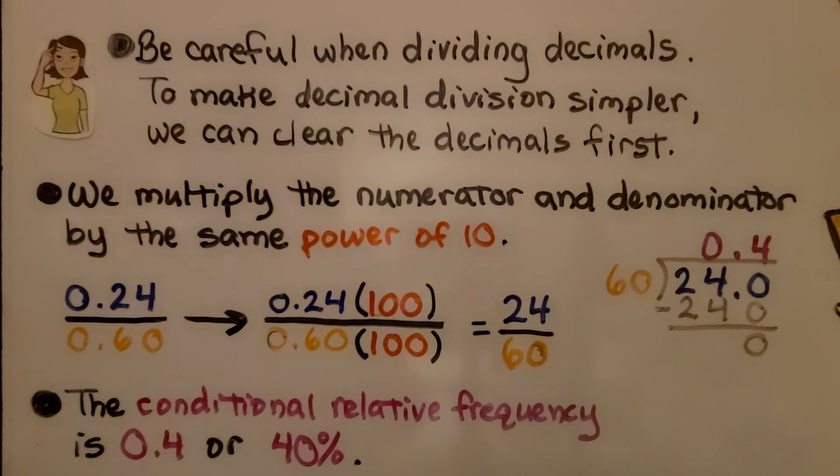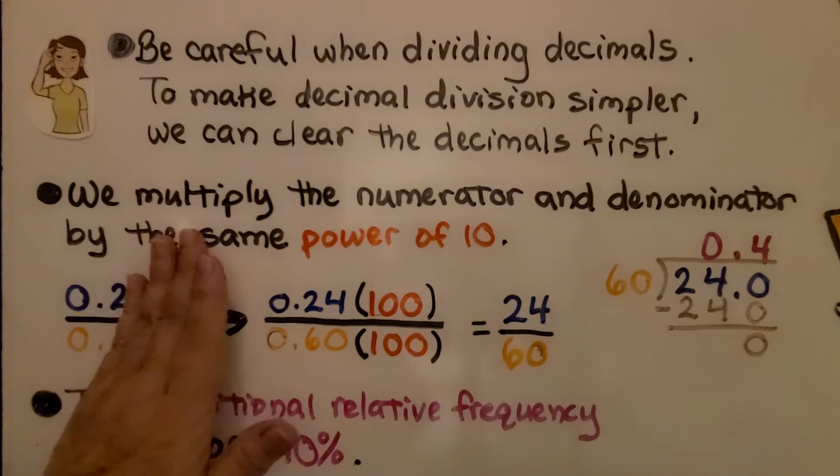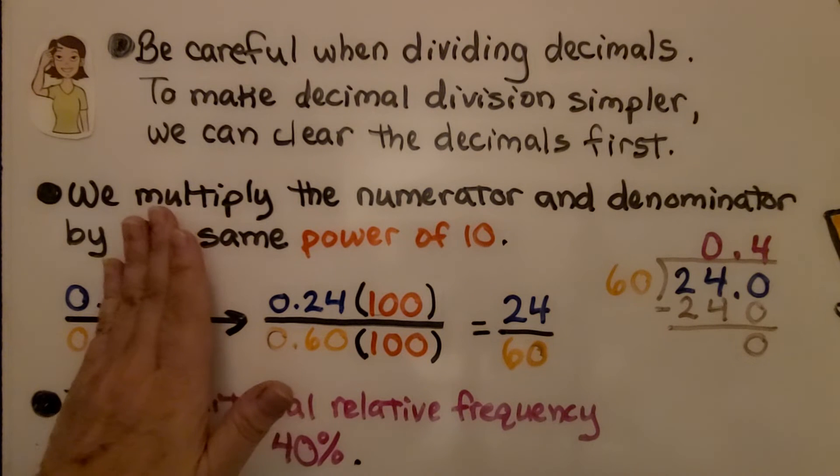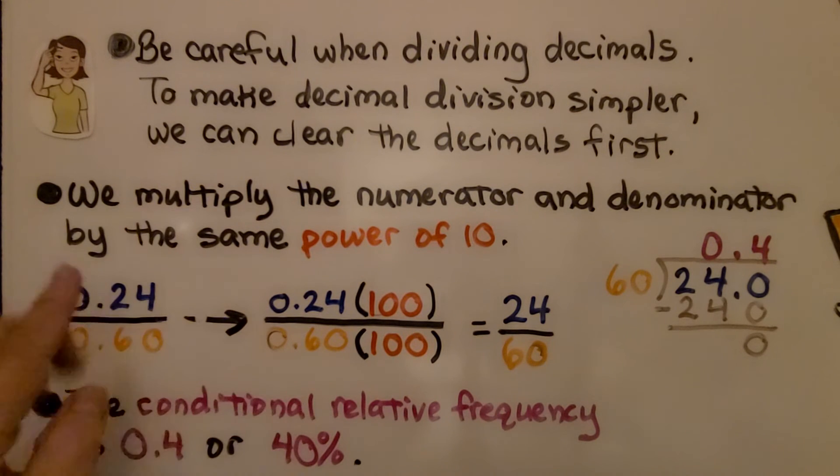Now be careful when dividing decimals. To make decimal divisions simpler, we can clear the decimals first. We multiply the numerator and denominator by the same power of ten. If this was just 0.2, well, we could just multiply it by 10 because we need to only move it one hop.